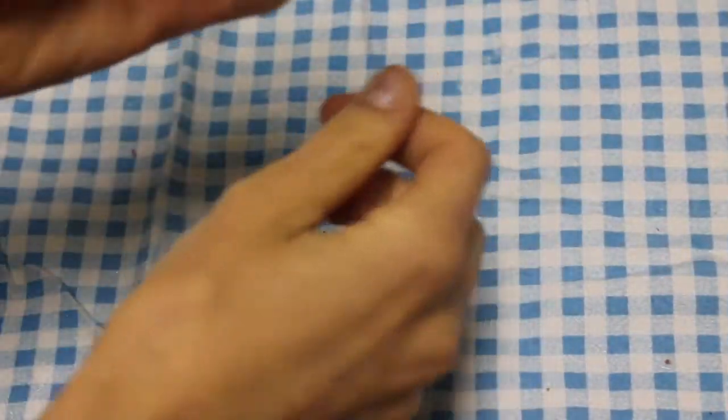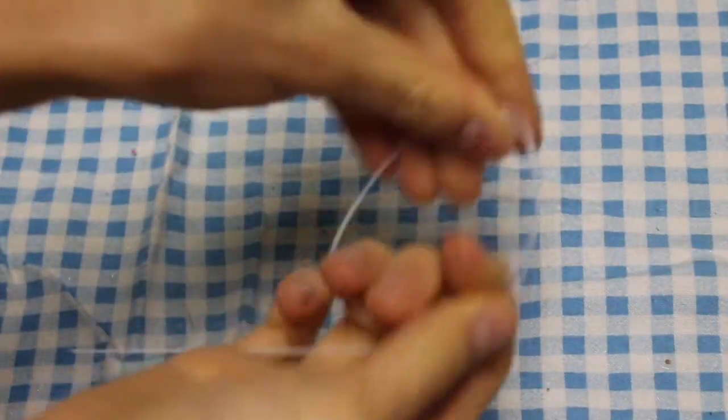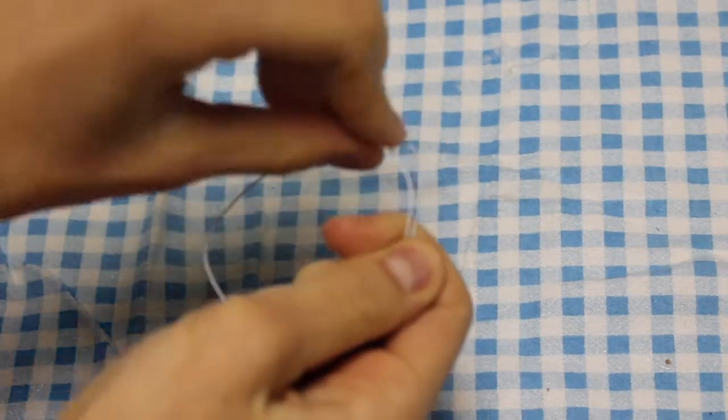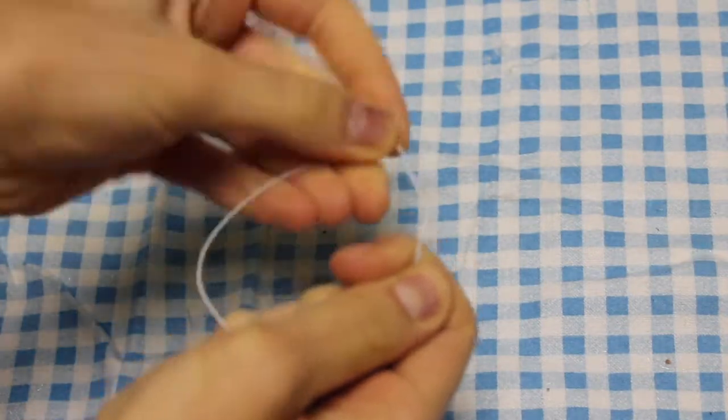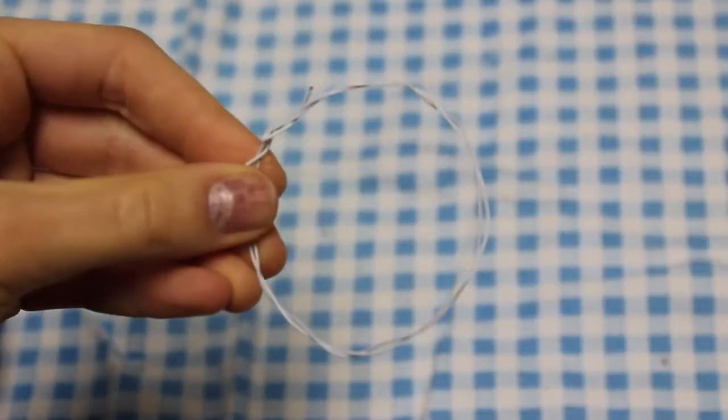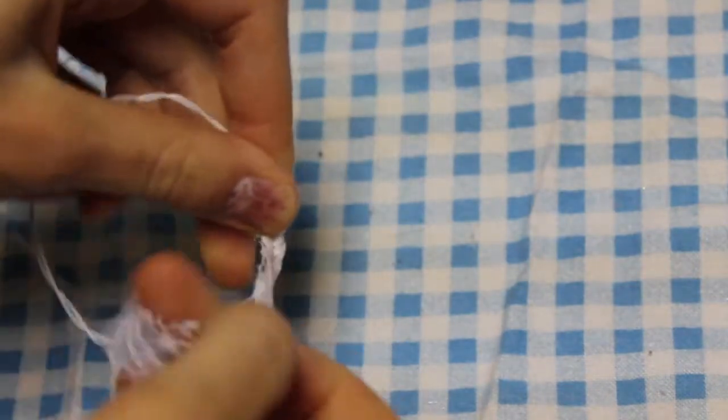Okay, so we're going to start by taking our wire and just bending it into a circle, however big you want. I just did an average dream catcher size compared to the American Girl doll. I twisted the ends so they would stay in there, and then I took some ribbon and wrapped it around the wire ring, gluing as I went.